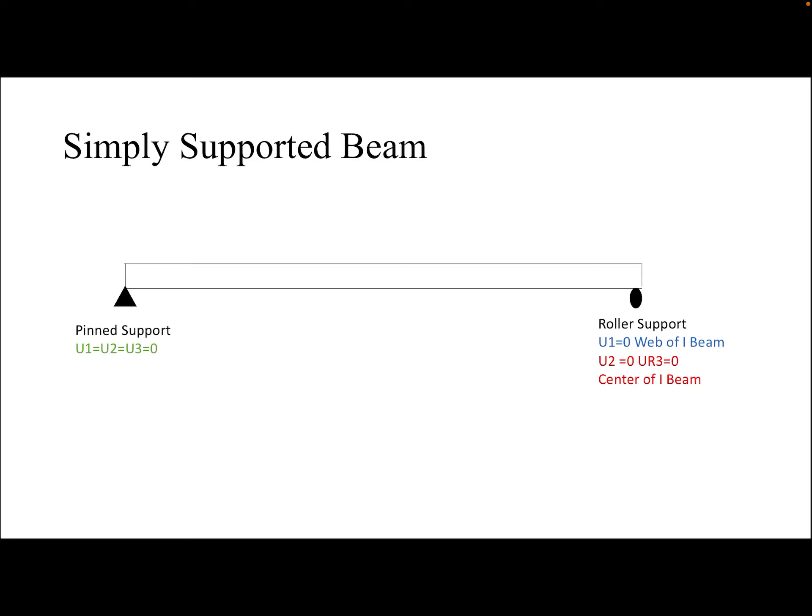So this is a simply supported beam — one end is a pin support and the other end is a roller support. Direction 1 (U1) is the lateral direction of the beam, direction 2 (U2) is the vertical direction, and direction 3 (U3) is along the length of the beam.